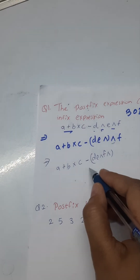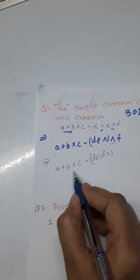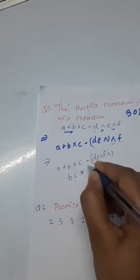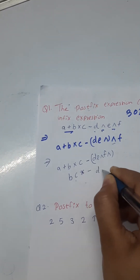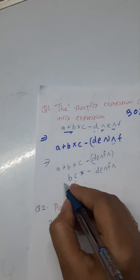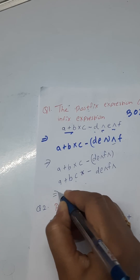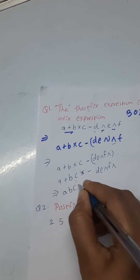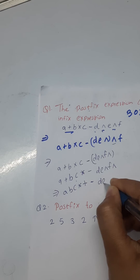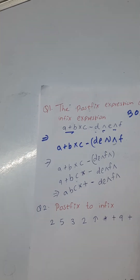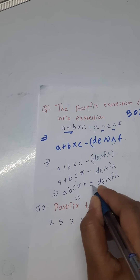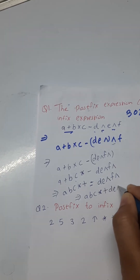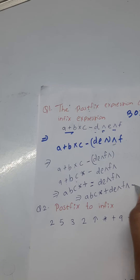Next precedence is multiplication: B C multiply. Then minus, D E order F order, and plus A. Next precedence is plus: A B C multiply plus, and then minus D E order F order. After that, the minus operator is applied: A B C multiply plus, D E order F order, then minus. This is the postfix answer for this infix expression.